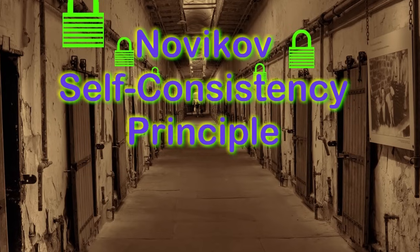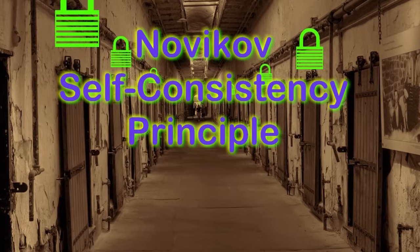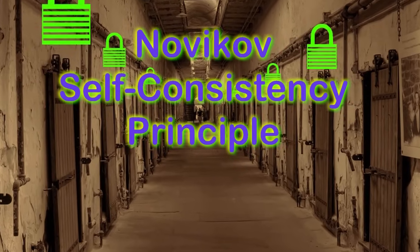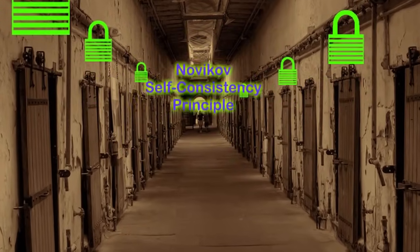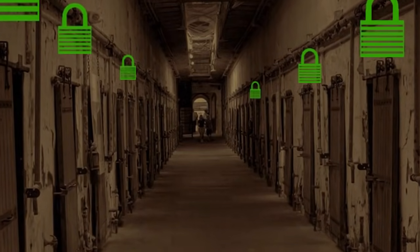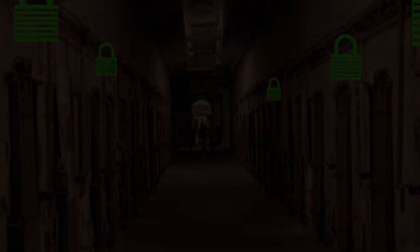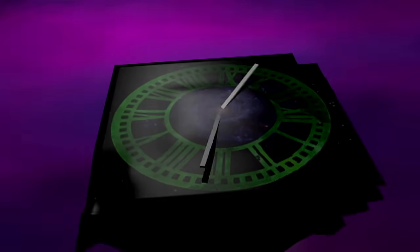He closes out paradoxes in time travel, which are permitted in some solutions of Einstein's field equations for general relativity, by asserting any event that would give rise to a paradox or change the past in any way must have a probability of zero. This doesn't ban time travel in and of itself though, it simply is arguing that any time travel has to result in no paradox or it would be infinitely improbable to occur. Novikov is arguing that regardless of whether or not time travel is possible, you would not be able to do anything that causes a paradox.